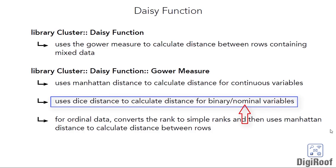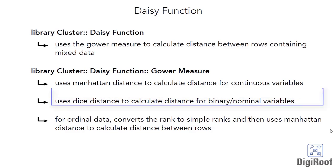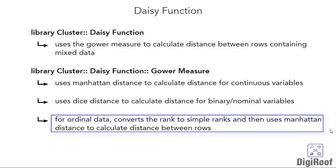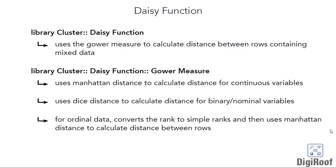All this would happen in the background, so we don't need to make any changes to the nominal variable ourselves. If you still wish to understand the conversion process from nominal to binary data, we have covered it in an earlier video. The Gower measure can also handle ordinal data. For ordinal data, it would first convert the ranking data to simple ranks starting from 1 and then use the Manhattan measure to calculate the distance between such rows. Once the Gower measure has calculated the distance between rows based on their data type, it brings all the distances together to create a single value representing the distance between any two rows.